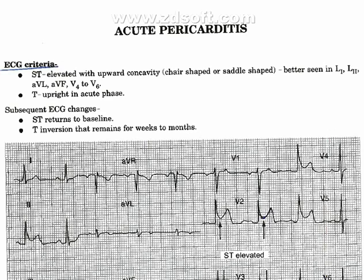Now we will discuss acute pericarditis — ECG criteria. ST elevation with upward concavity, chair-shaped or saddle-shaped. Better seen in lead I, lead II, aVL, aVF, and V4 to V6.